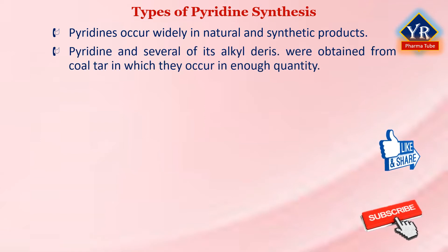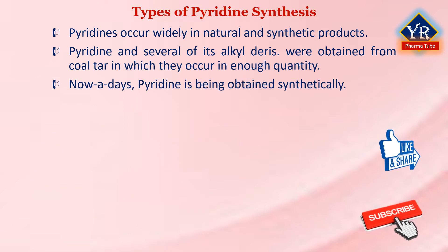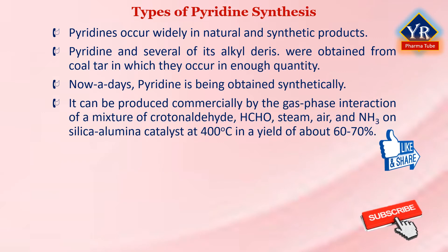Enough quantity of pyridine and simple pyridine alkyl derivatives were obtained from coal tar. Nowadays, pyridine is being obtained synthetically. It can be produced commercially by the gas phase interaction of a mixture of crotonaldehyde, formaldehyde, steam, air, and ammonia on silica-alumina catalyst at 400 degrees centigrade in a yield of about 60 to 70 percent. A large number of synthetic procedures exist for the preparation of pyridines in the laboratory.